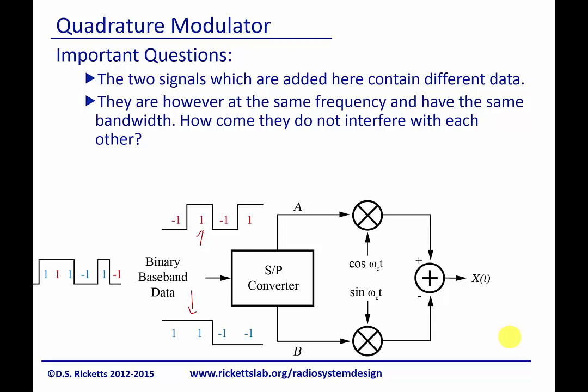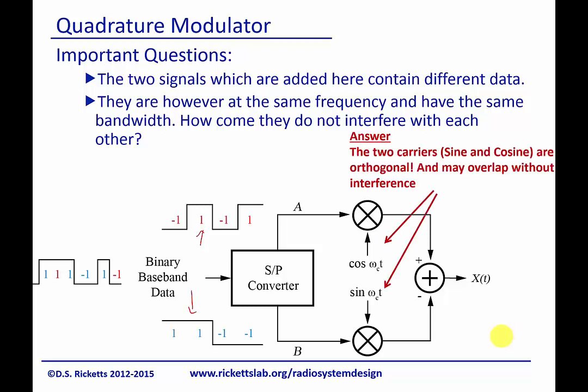But they have the same bandwidth and they have the same transmit frequency. So once again, how do we transmit both of them? And just remember that it's because we have orthogonal carriers that we're able to transmit each one of these.